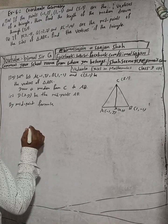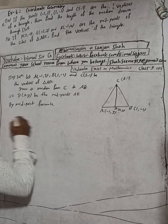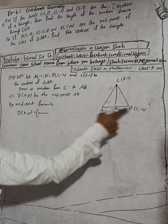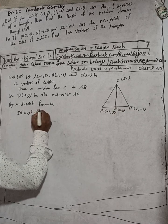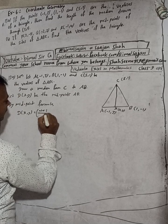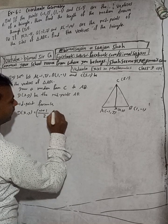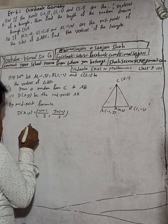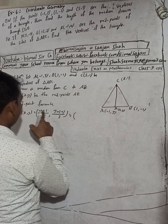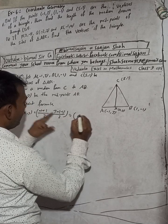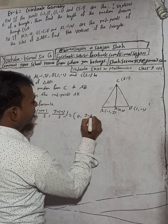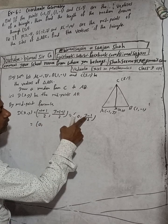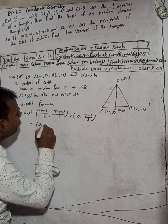By the midpoint formula, D(x, y) is equal to: x = (-1 + 1) / 2 = 0 / 2 = 0, and y = (3 + (-1)) / 2 = (3 - 1) / 2 = 2 / 2 = 1.